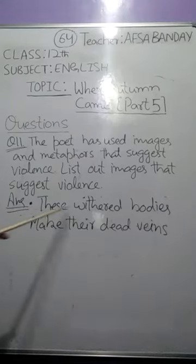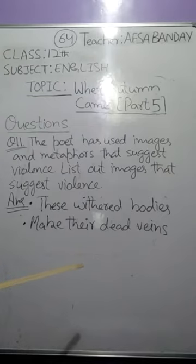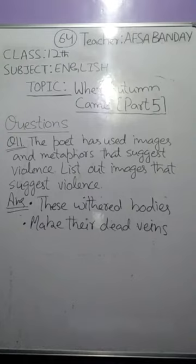'These withered bodies' — dull, lifeless, helpless — also suggests violence inflicted upon something. 'Make their dead veins' — when violence is inflicted, things become dead. These images all suggest that violence has been used against something — here the trees and the birds — and the one who has done it is the autumn.